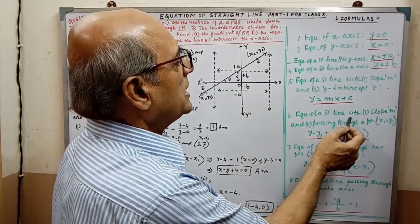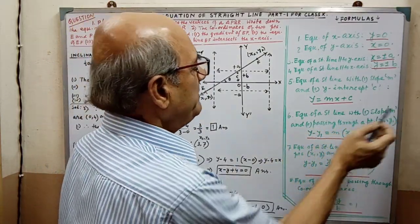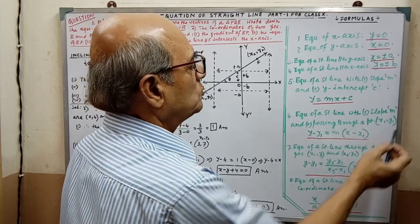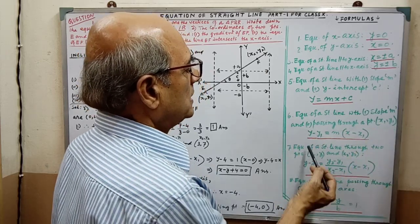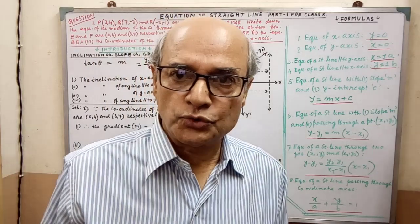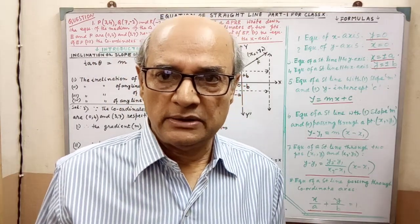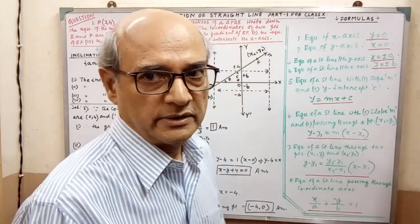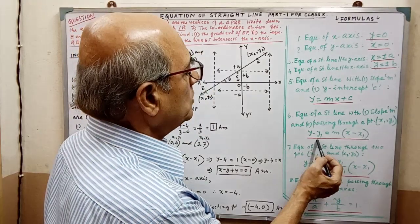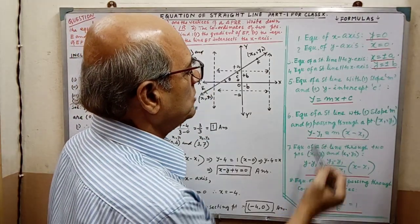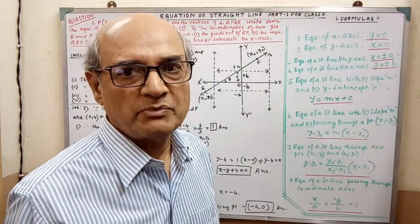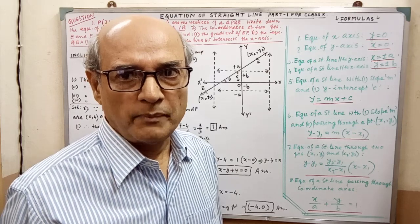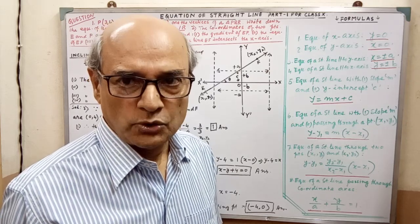The equation of a straight line with slope M and passing through a point x1, y1 — here also two conditions: slope and coordinates of one point. Then the equation will be y minus y1 equal to m into x minus x1.